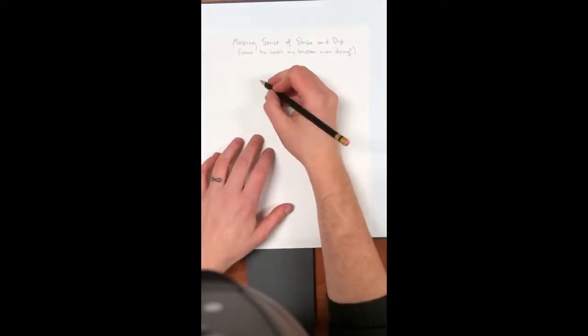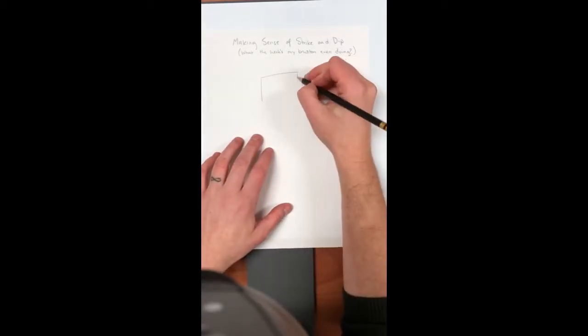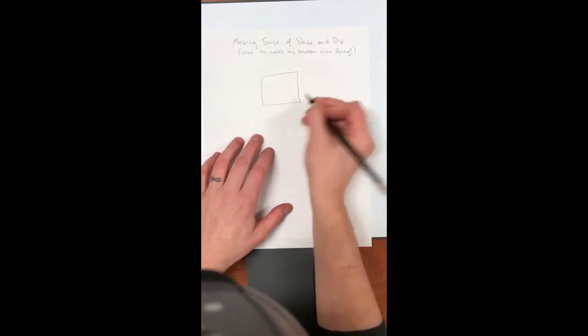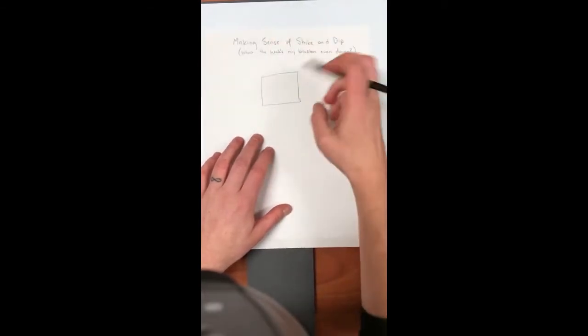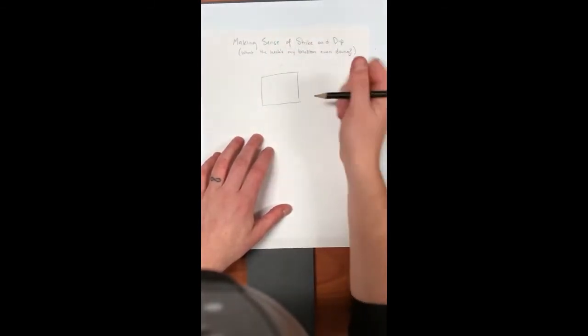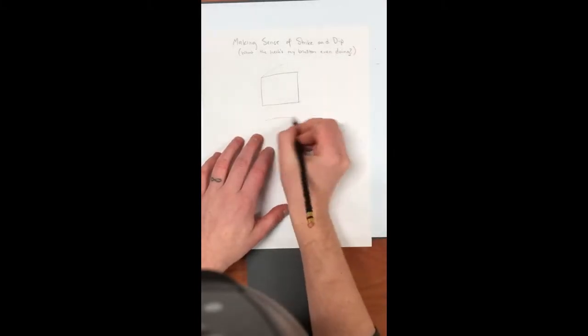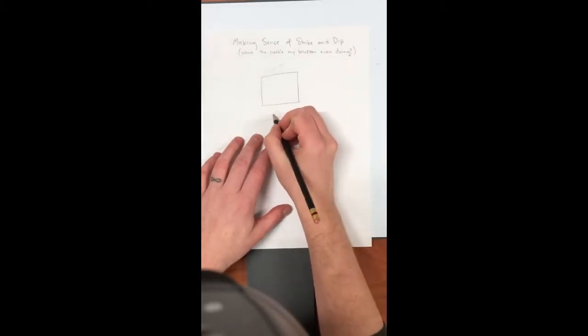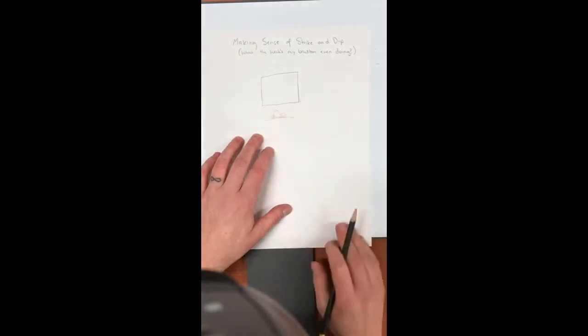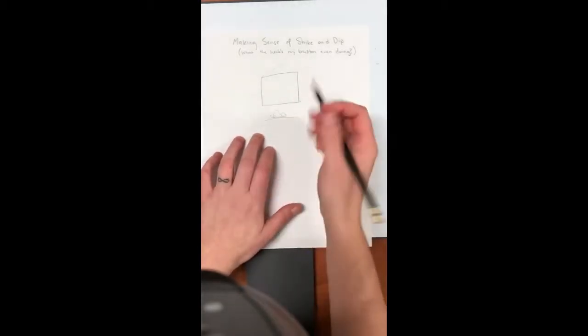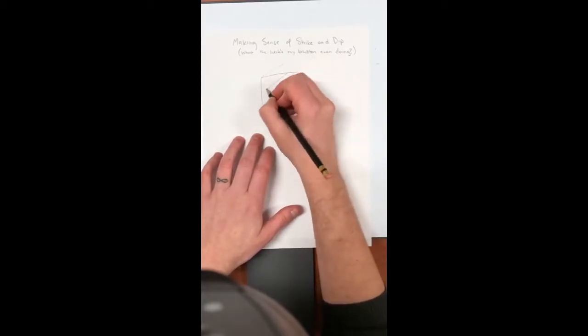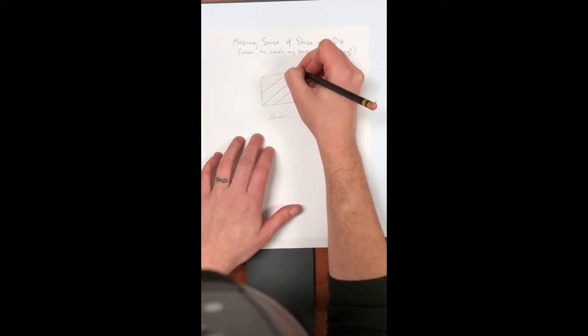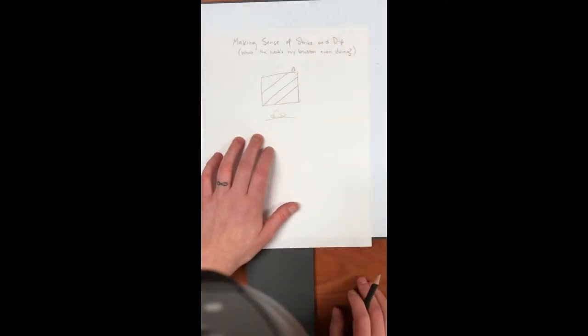So first what I want to do is imagine a scenario where you might find yourself wanting to record information about the orientation of some rocks. I'll start in 2D actually. Let's say that you are driving along, this is a car, I'm just not a good car artist. Let's say you're driving along in your car and you see a pretty cool outcrop, right? So it's something like that. Here's a little tree for scale.